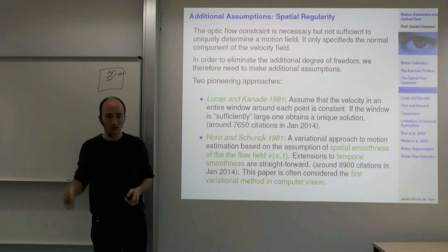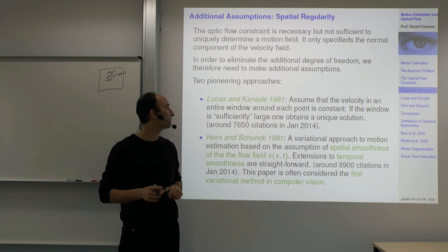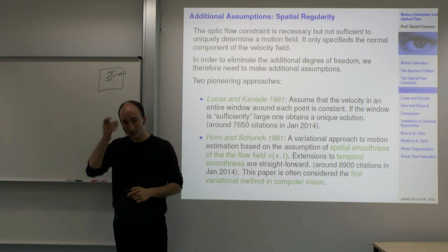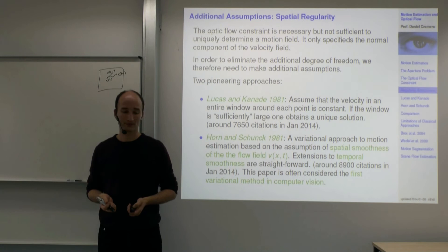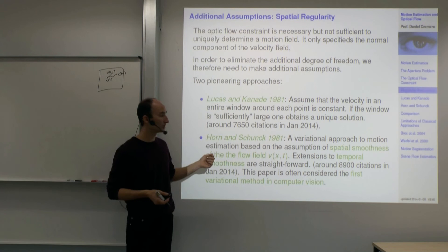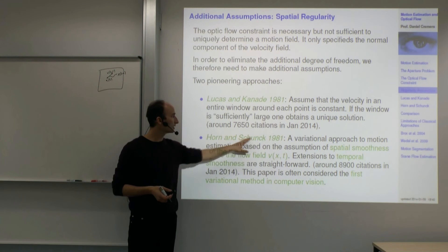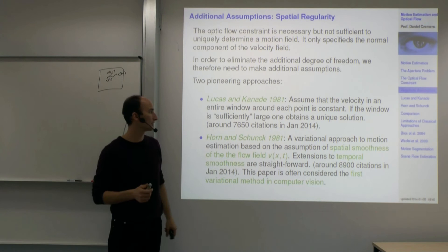The assumption of spatial regularity leads to two complementary approaches proposed in 1981. From that point of view, 1981 is the birth of motion estimation algorithms and also the birth of variational methods for computer vision. The work of Horn and Schunck in 1981 is considered the first variational approach to image analysis problems.